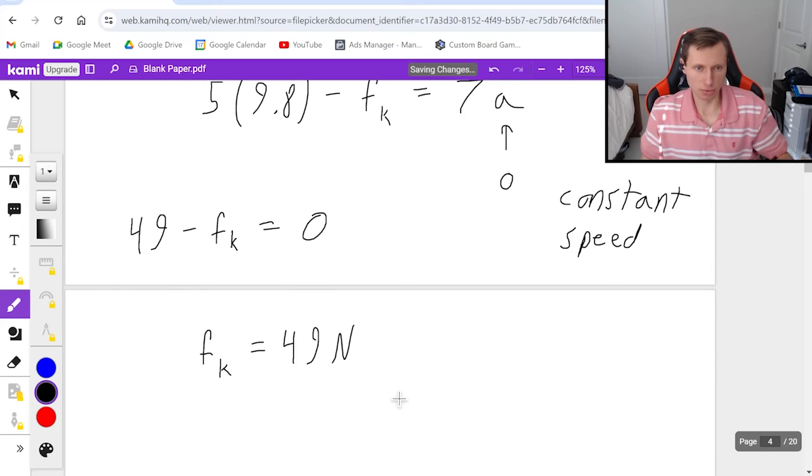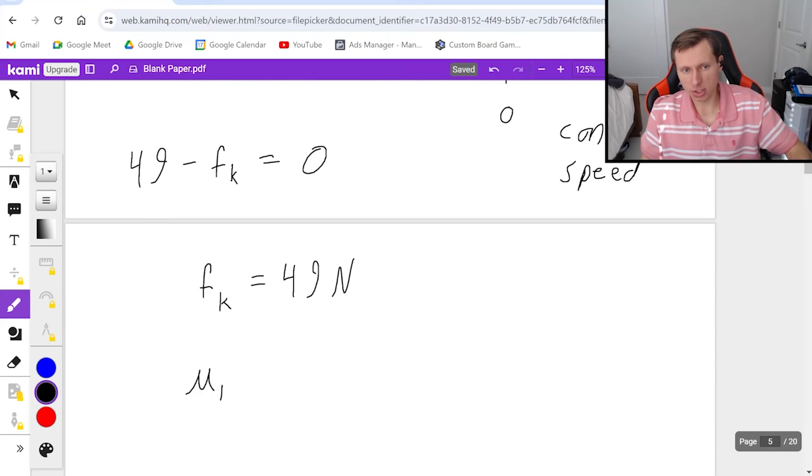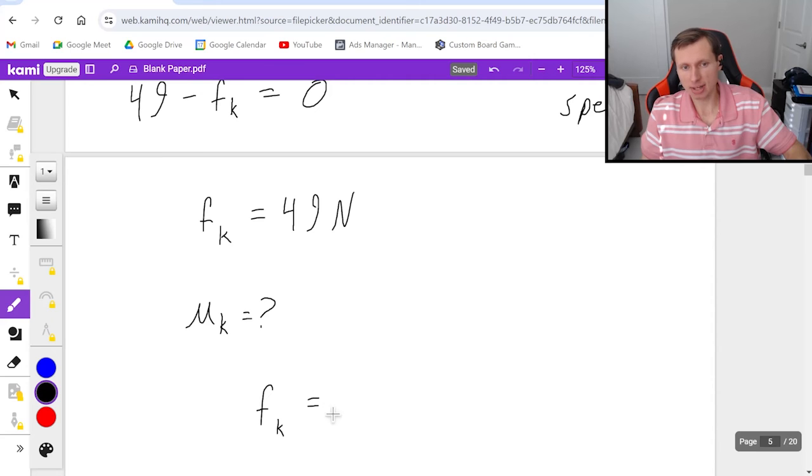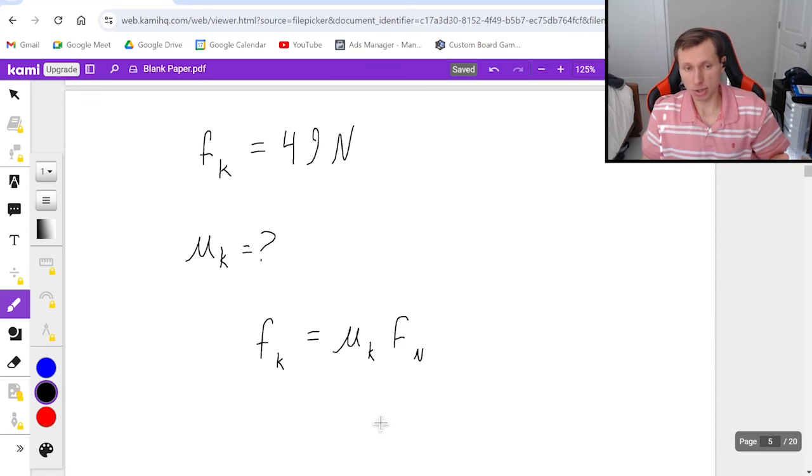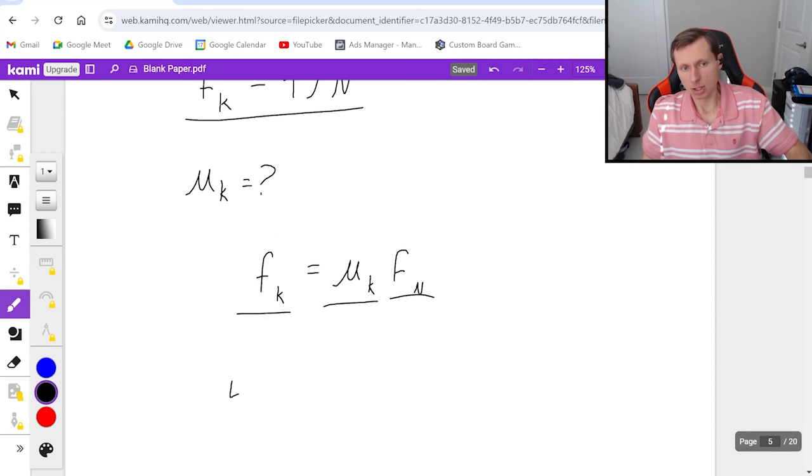Now the question didn't ask for the normal force, it asked for the coefficient of friction. So now if we want to find that coefficient, we're going to plug into the friction force equation, f_k equals mu_k times the normal force. Maybe you tried starting with this equation, but that would not be a good idea, because if you tried, you don't know this value, you don't know this value, and you don't know this value. So it's kind of impossible to solve. We had to find f_k first, using F_net of the system.